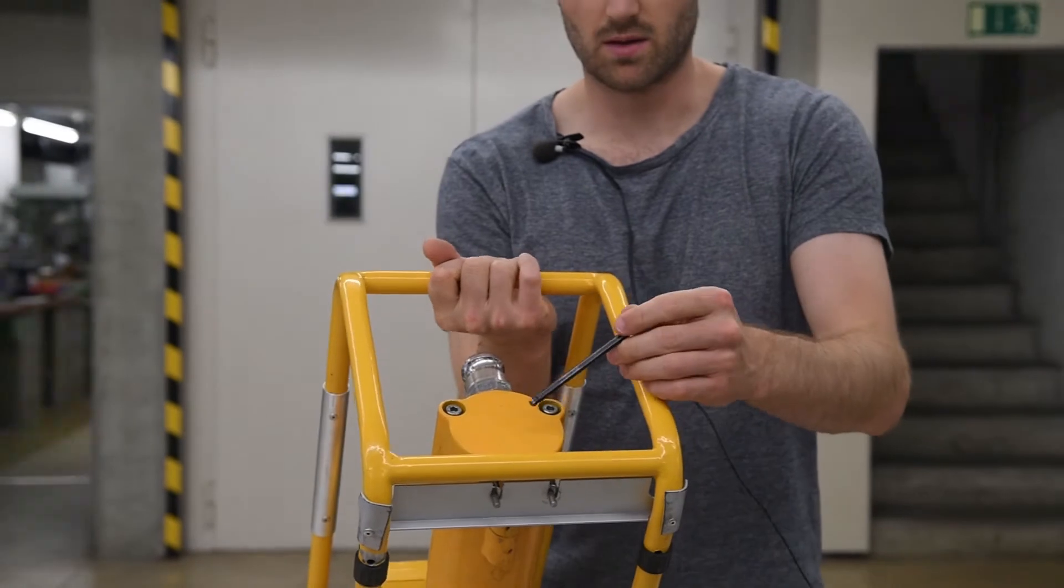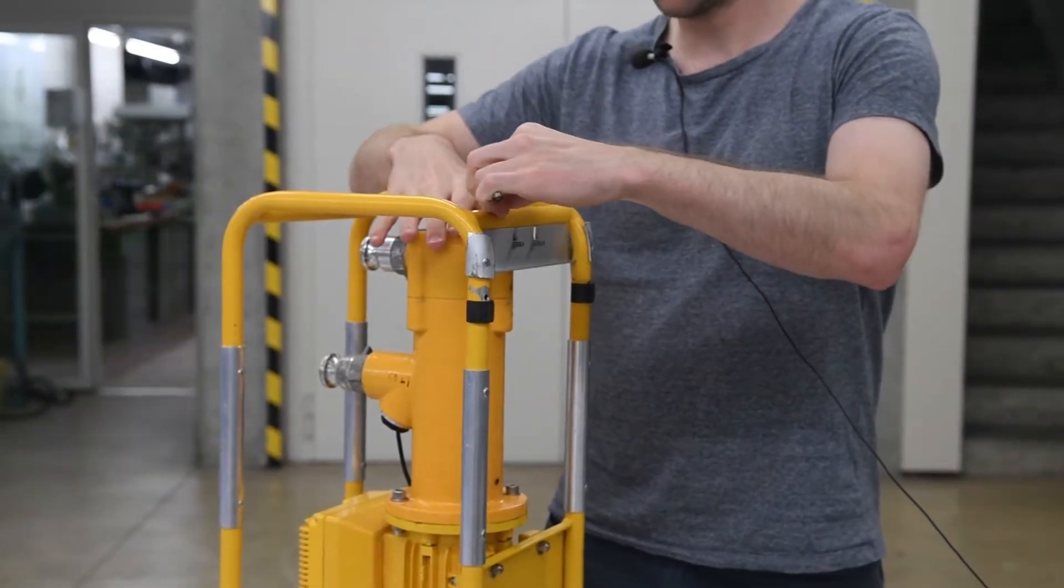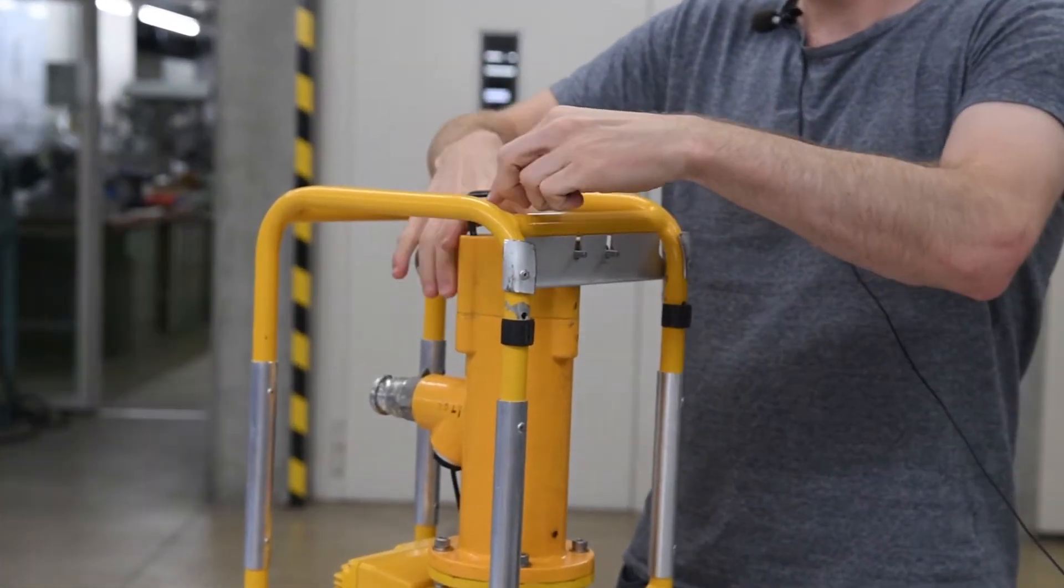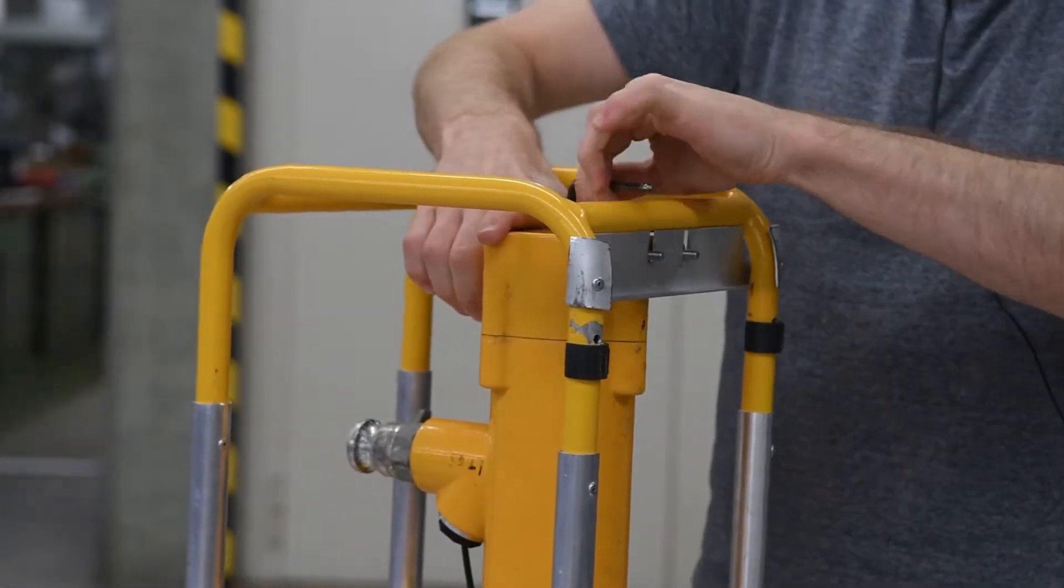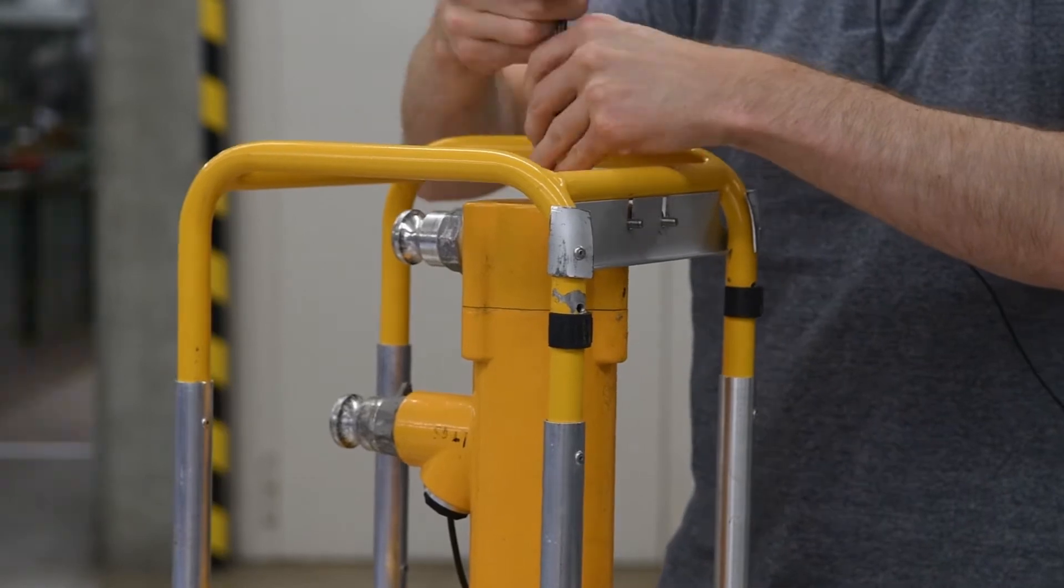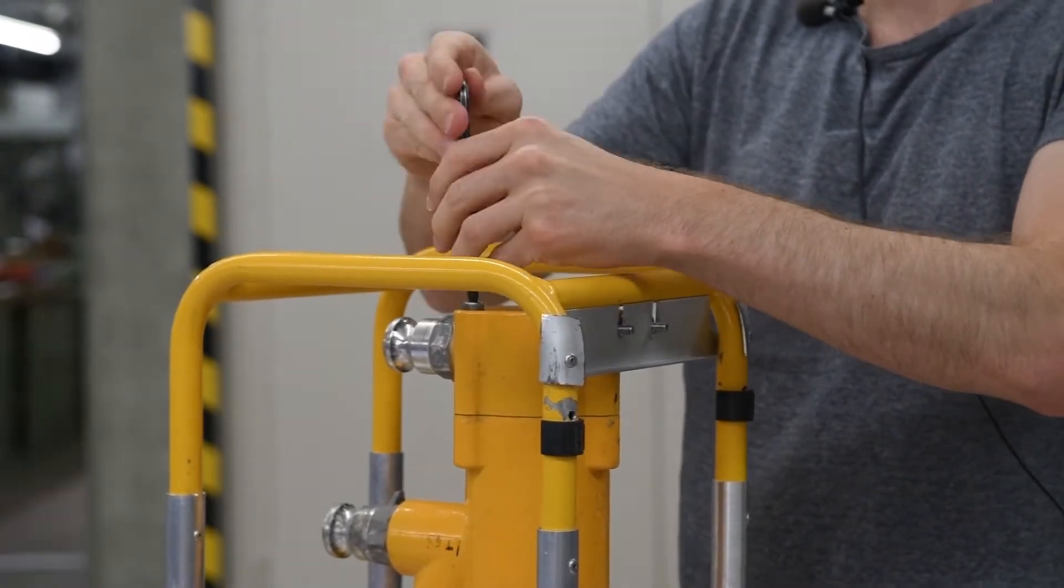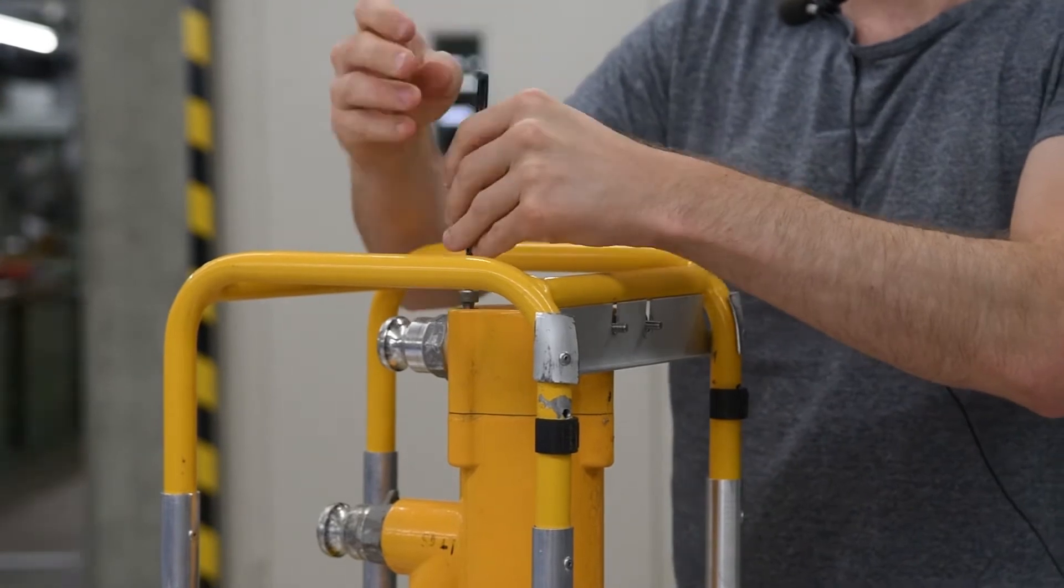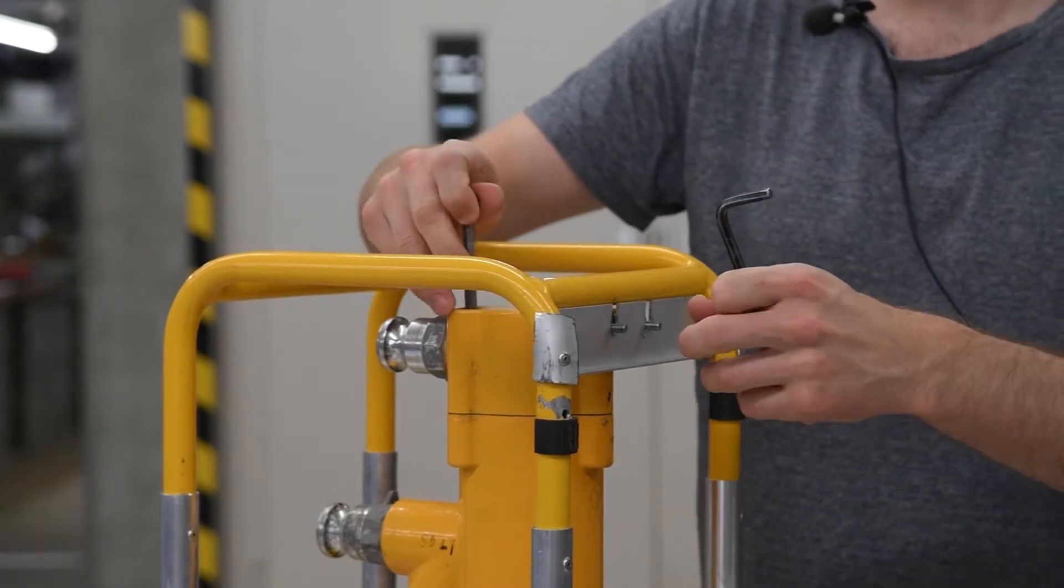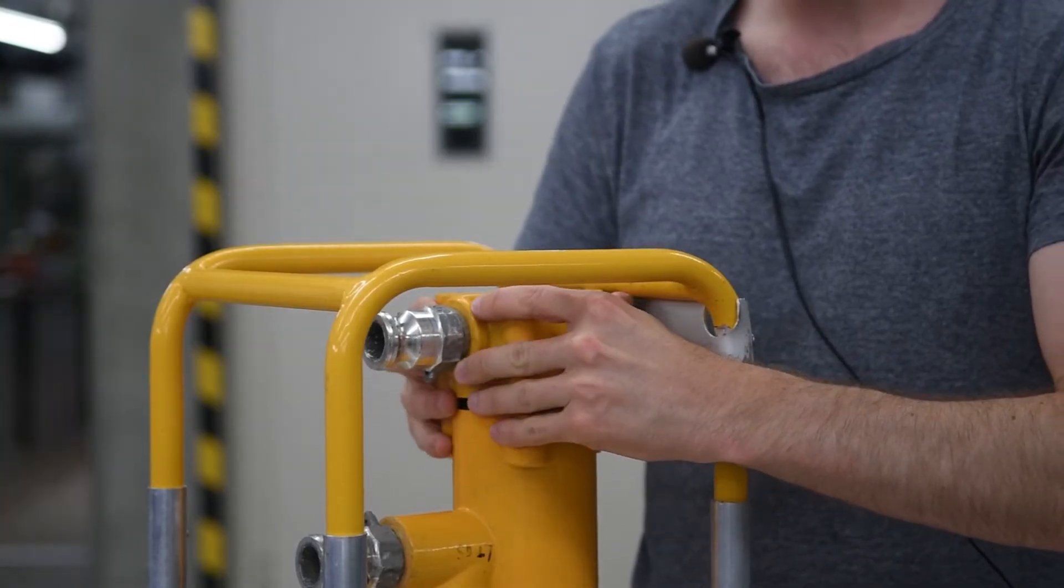Next we use the allen key to remove the three screws at the top. Now we can remove the cap.